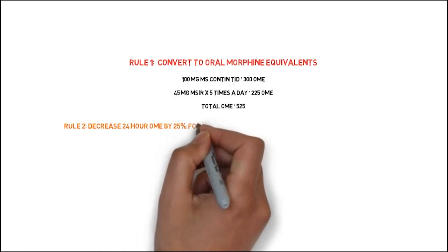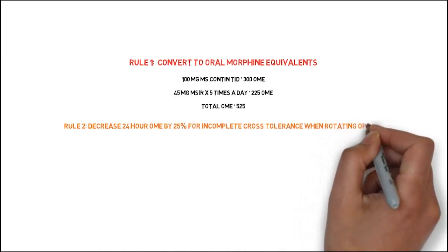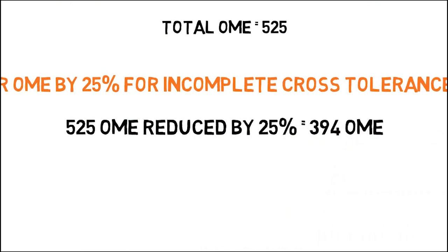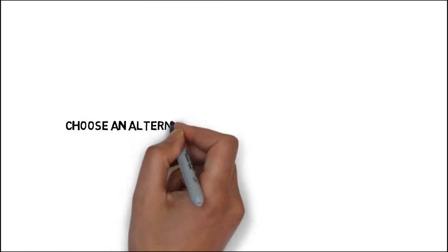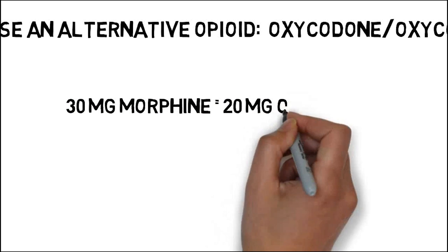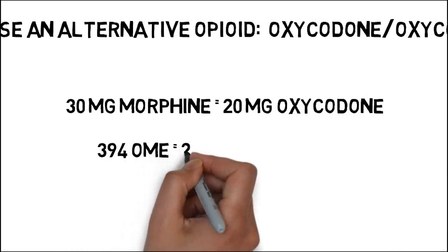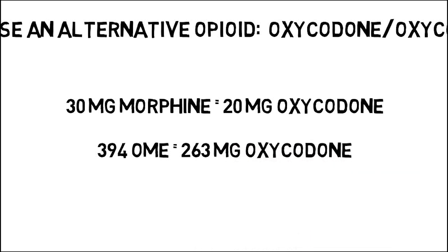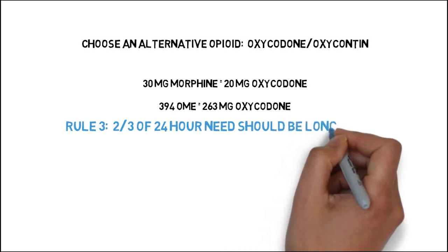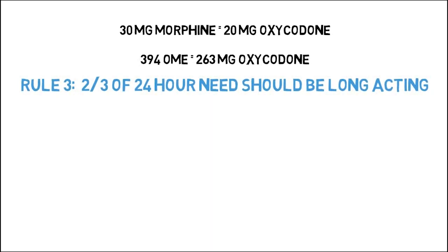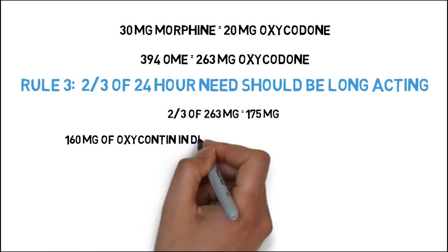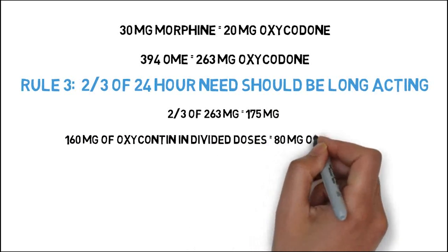Using rule two, we adjust for incomplete cross-tolerance by decreasing the OME total by 25%. A 25% reduction of 525 OME equals 394 OME. We plan to use oxycodone and its long-acting equivalent, OxyContin. Using the conversion of 30 mg morphine equaling 20 mg oxycodone, 394 OME equals 263 mg of oxycodone. Rule three states the long-acting dose is two-thirds of the 24-hour OME. Two-thirds of 263 mg equals 175 mg. For convenient dosing, we use 160 mg of oxycodone in divided doses: 80 mg of OxyContin twice per day.